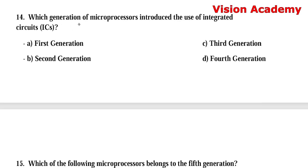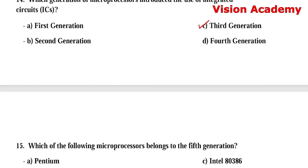Question number 14: Which generation of microprocessors introduced the use of integrated circuits (ICs)? Option A: first generation. Option B: second generation. Option C: third generation. Option D: fourth generation. The right answer is Option C, third generation.